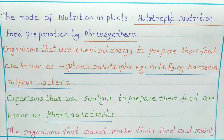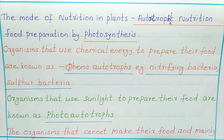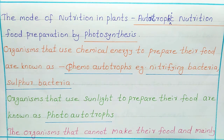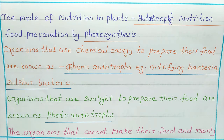The mode of nutrition in plants is autotrophic nutrition. The meaning of 'auto' is self, so autotrophic nutrition means self-nutrition. Food is prepared by the plant itself using the method of photosynthesis. Photosynthesis is the process by which the plant makes food using oxygen and sunlight. Chlorophyll also takes part in photosynthesis.